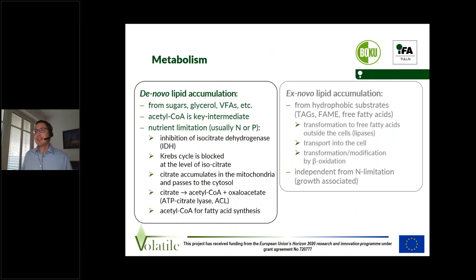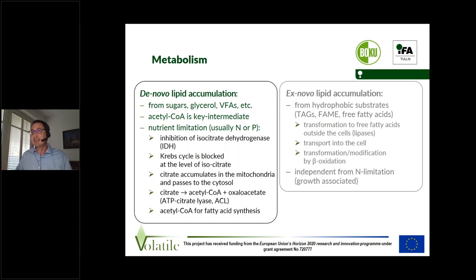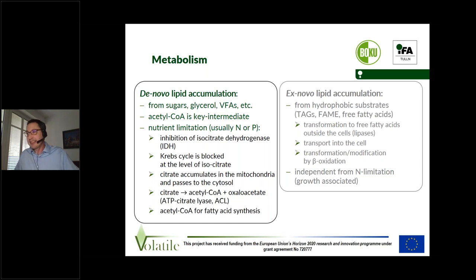A short note on the metabolism — I won't go too far into the biochemical details. When we are using substrates like sugars or glycerol, but also volatile fatty acids as in this project, we are talking about de novo lipid accumulation. The key intermediate is acetyl-coenzyme A. Basically, if a nutrient like nitrogen or phosphorus is not available, the tricarboxylic acid cycle is blocked, citrate accumulates and passes into the cytosol, where it is converted into acetyl-coenzyme A.